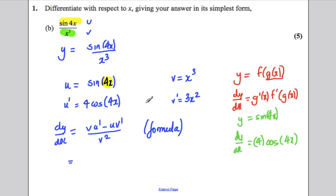Then, just substitute in vu dash. This times this would give us 4x cubed cos of 4x. Subtract this times this. This would give us 3x squared sine of 4x. All divided by v squared, which is x cubed squared.